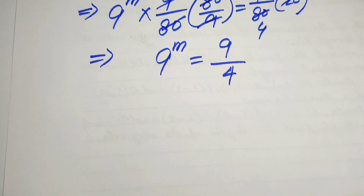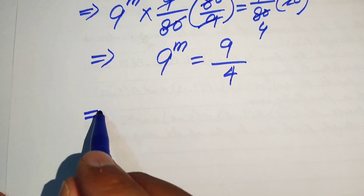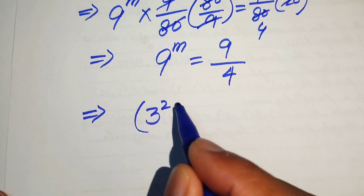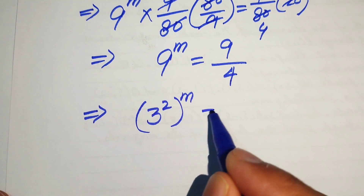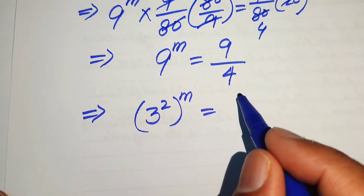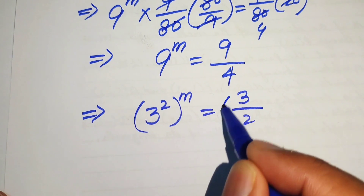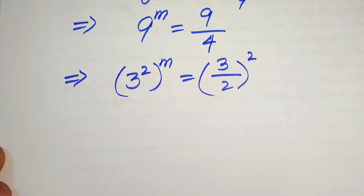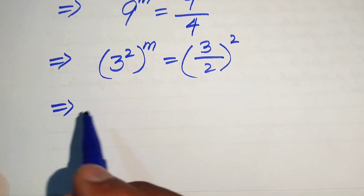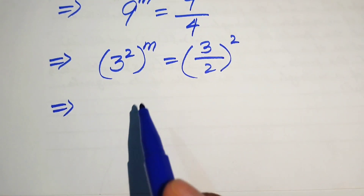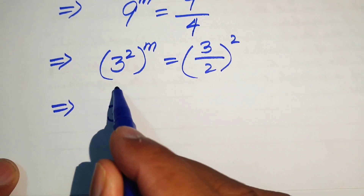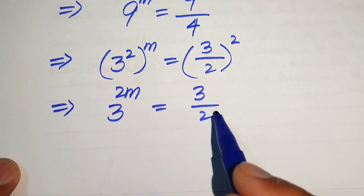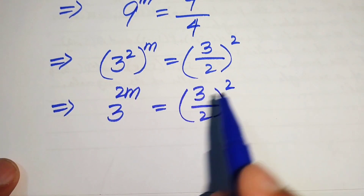After that we need further simplification. We write 9 as 3 squared with whole power m, and we write 9 over 4 as 3 over 2, squared. Multiplying the exponents gives 3 to the power of 2m equals 3 over 2, whole squared.